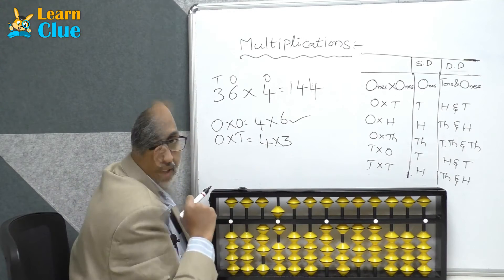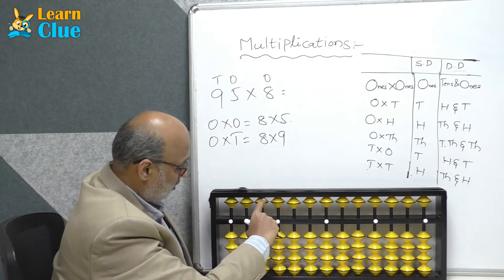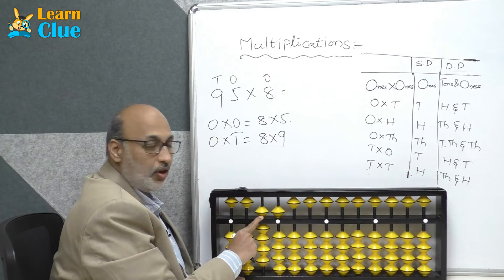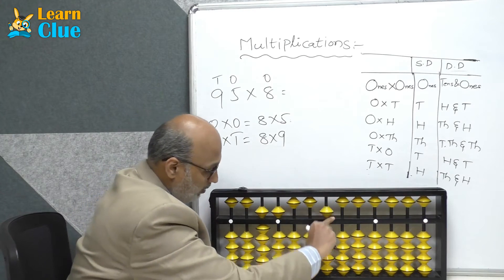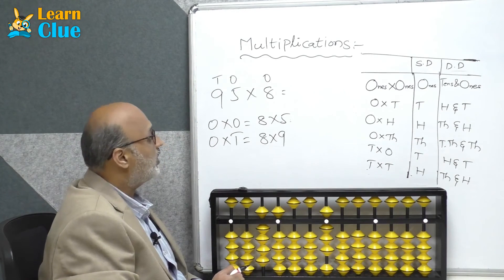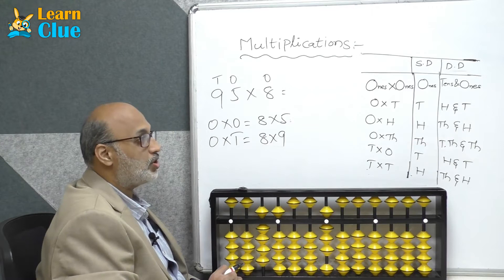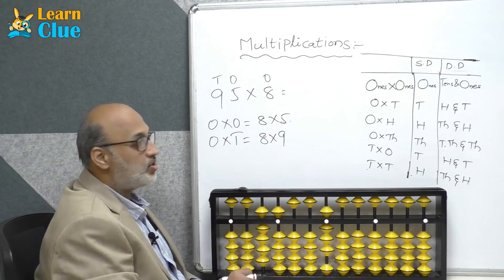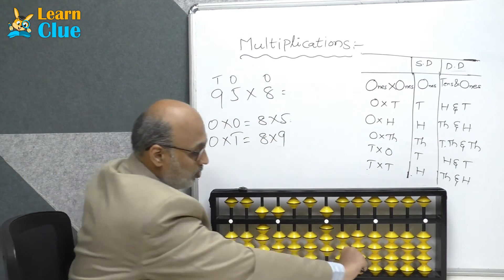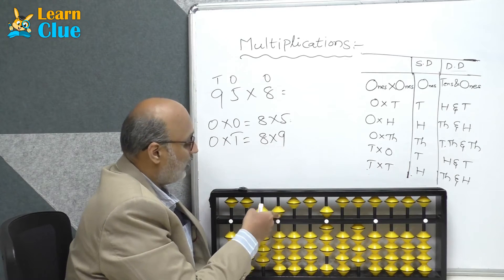Now we will place the problem: 95 is the multiplicand, 8 is the multiplier — place 8 over here. Start doing calculations. 8 fives are 40. If it is a double digit number for ones into ones, first we have to keep it in the tens place and ones place. So keep 40 over here — we have done the calculation 8 into 5, so remove 5.